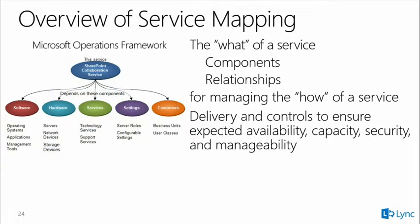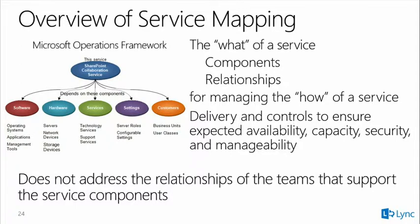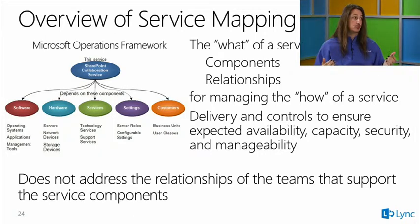An overview of what service mapping is: it contains the 'what' of a service — the different components and relationships for managing the 'how' of that service. It contains the delivery and controls to ensure expected availability, capacity, security, and manageability. It does not address the relationships of the teams that support these service components. It's abstracted — looking at it from an operations perspective: what are we trying to keep up, and how are we going to keep those services up?